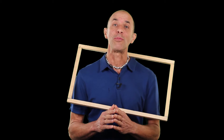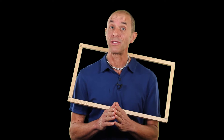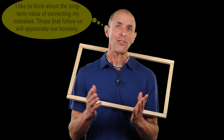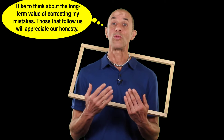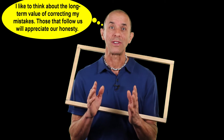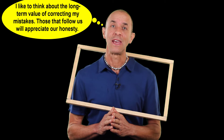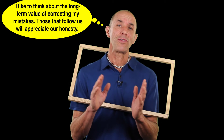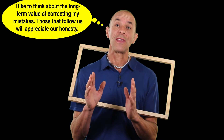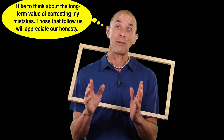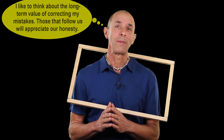Correcting errors in our published articles protects our reputation and that of the journals where the mistakes were published. It also shows our willingness to do what's in the best interest of science and for those who rely on the data that we publish now and in the future.